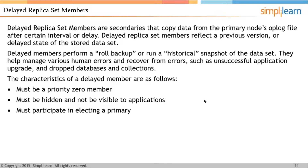In case of a failure, delayed replica set members allow the system to come back to the state it was in at the delayed point. They perform rollbacks and maintain historical snapshots of the data set, helping manage human errors and recover from issues such as unsuccessful application upgrades, dropped databases, or dropped collections.